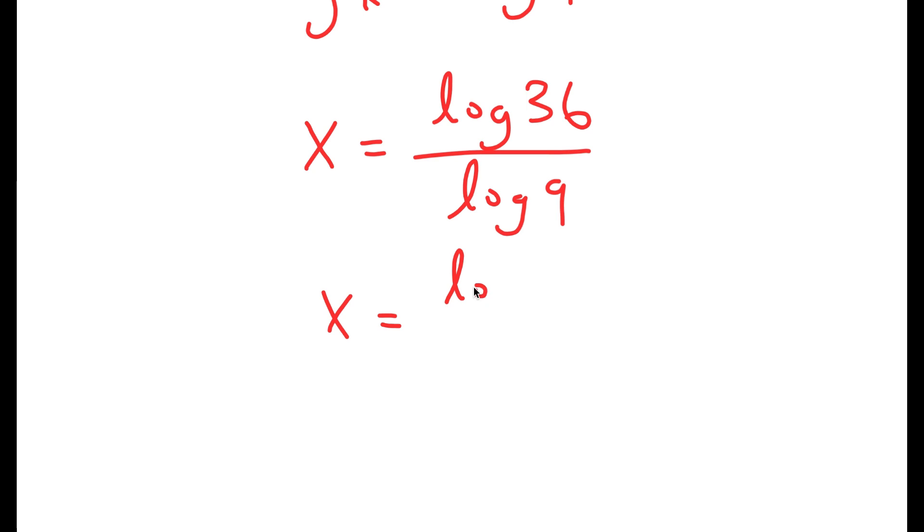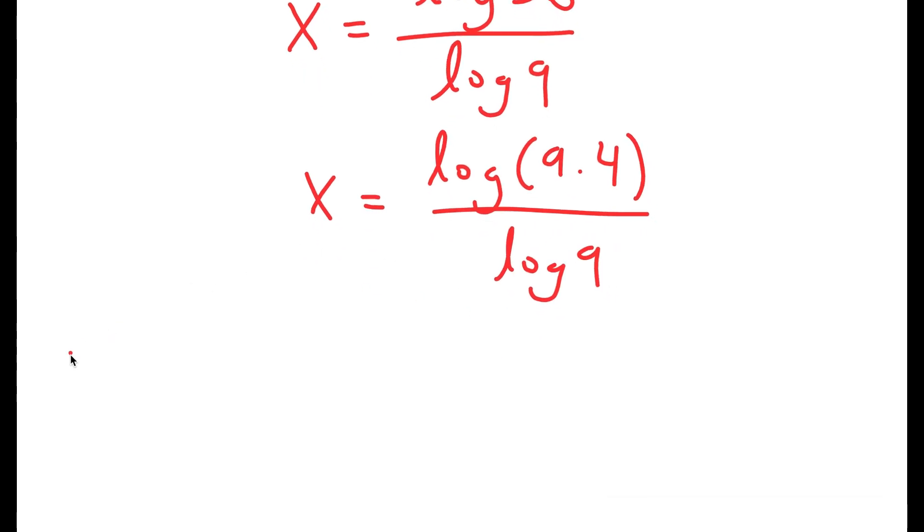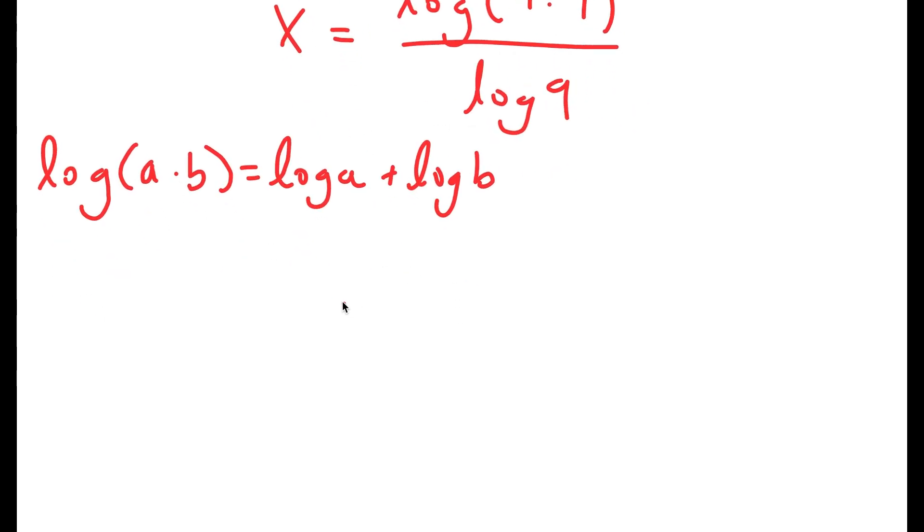Now, I'm going to rewrite log 36 as log of 9 times 4. So I did this because I can use the property log of a times b is equal to log a plus log b. This case turns into log 9 plus log 4, and I have this over log 9.